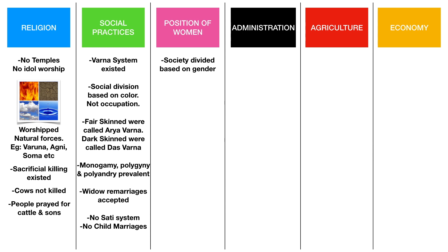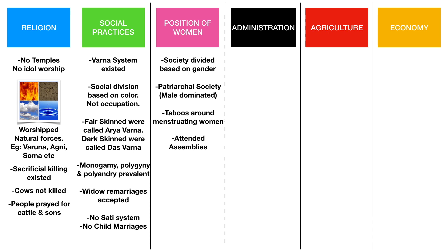Coming to the position of women, society at this time was divided based on gender. The early Vedic society was mostly male-dominated, which means patriarchal. There were taboos around menstruating women. Despite all these taboos and male domination, women were allowed to enter assemblies where important administration subjects were discussed.